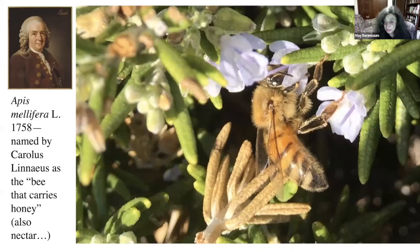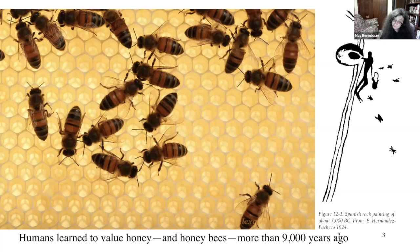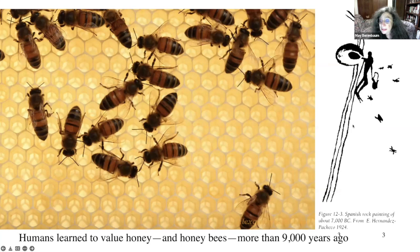You need no introduction to this particular species. Back in 1758, Carolus Linnaeus, the first organized systematist to give scientific names to all animals known at the time, named this bee Apis mellifera, which literally means 'the bee that carries honey' — 'mellifer' meaning to carry. It's true they can carry honey, but more often they carry nectar to make honey. Humans learned about this more than 9,000 years ago and especially valued honey and honeybees.